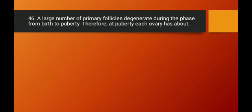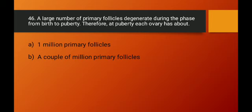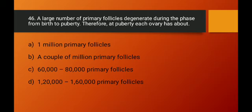Question number forty-six: a large number of primary follicles degenerate during the phase from birth to puberty. Therefore, at puberty, each ovary has about how many primary follicles? According to the NCERT textbook, at puberty each ovary has about 60,000 to 80,000 primary follicles. Option C is the right answer.